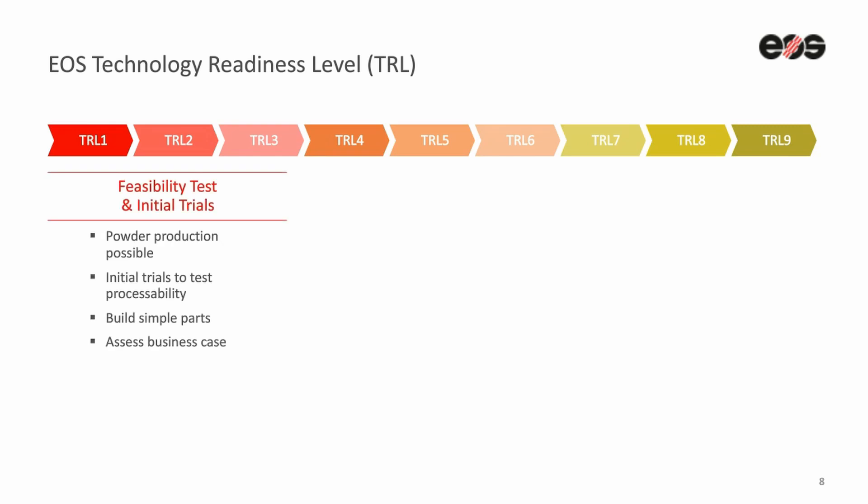This is what we call EOS technology readiness level, that can be applied to any process that we develop. So every process and material we develop has a TRL associated with it.